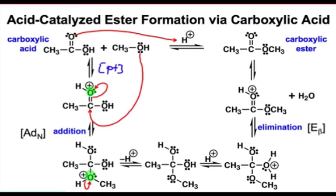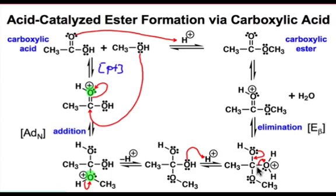After the nucleophile addition step, we lose the positive charge by writing the loss of H+ with a single curved arrow. That generates a second tetrahedral intermediate. Hydroxide isn't going to leave as OH⁻, so we must convert it into a better leaving group. Under acidic conditions, we make that leaving group neutral by moving a proton onto it. Then β-elimination takes place to generate the protonated carbonyl and loss of water.